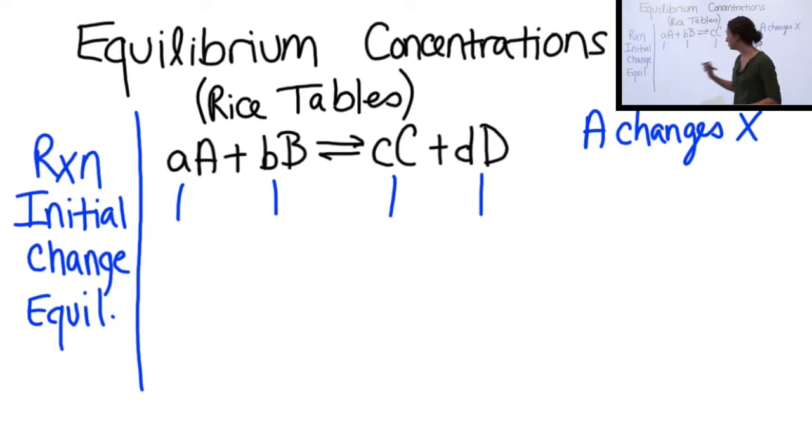And then since we're told that A changes X, we know that this is going to decrease. So if A decreases by X, then B is also going to decrease by a factor of X, but it's going to be different based on its coefficient. So B is going to decrease by negative bX.